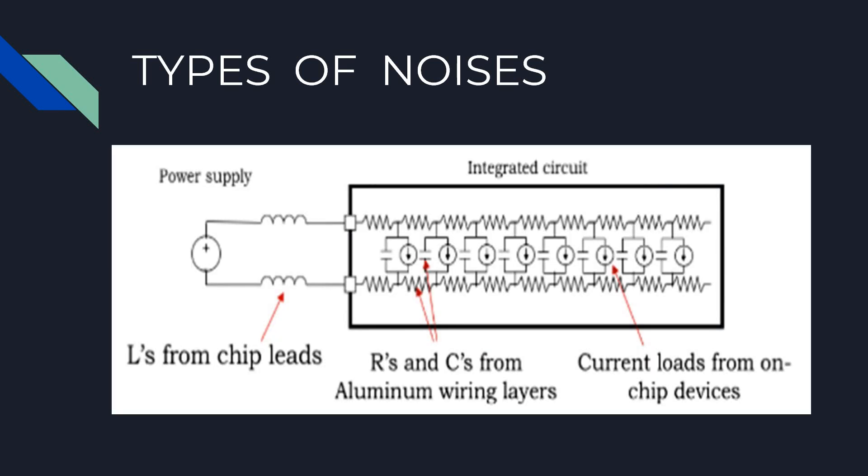Noise can be caused by electrical effects such as IR drops in conductors due to Ohm's law, capacitive coupling, L dI/dt effects caused by inductance and changing currents. So this leads to voltage deviations.